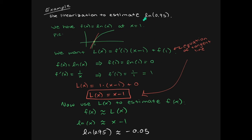To recap: first, determine what function you're looking at — here it's ln of x. Then determine the point of contact, which should be close to 0.95 and a nice number easy to work with — in our case x equals 1. Find the equation of the tangent line using the first derivative for the slope and a comma f of a for the point on the line. Finally, plug 0.95 into the tangent line instead of the ln function, since the tangent line is very close to the actual function — making the calculation easy. Challenge yourself and go look for more problems in the book.